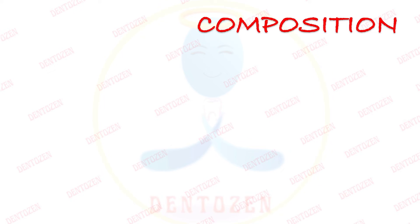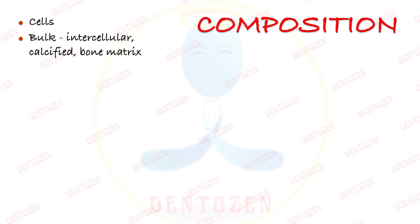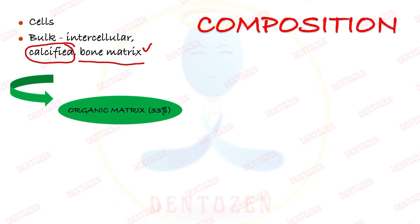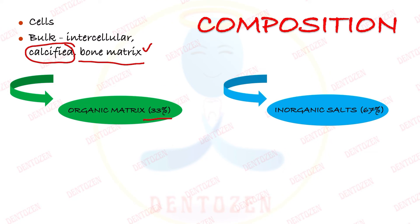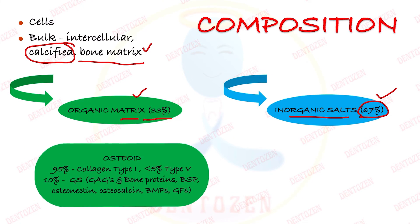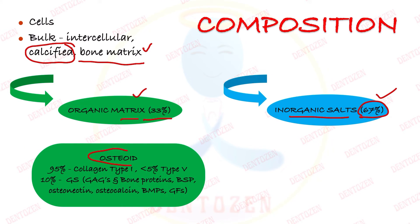What is bone made up of? There are cells inside the bone which we'll discuss later. In between these cells there is a bulk of organic matrix which is the main tissue. This organic matrix gets calcified. There is an organic component of 33% as well as inorganic material which is 67%. When organic matrix is not mineralized it is called osteoid — and that is your viva question.